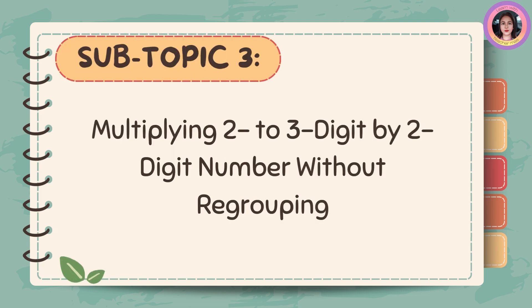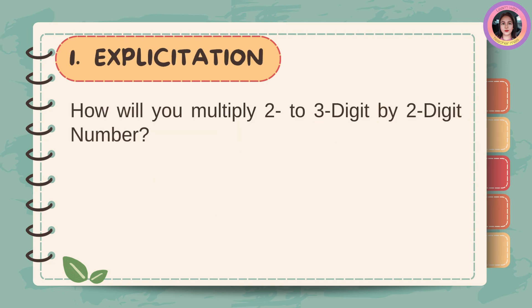Multiplying 2 to 3 digits by 2-digit numbers without regrouping. How will you multiply a 2 to 3-digit number by a 2-digit number?